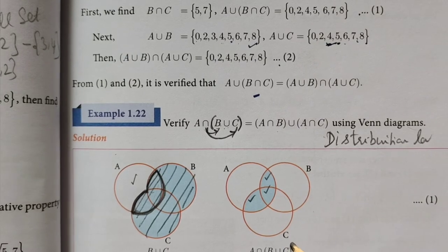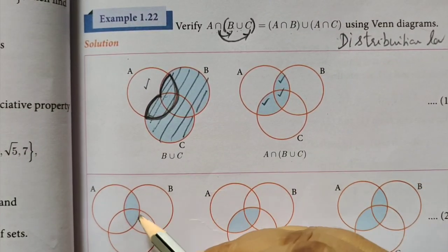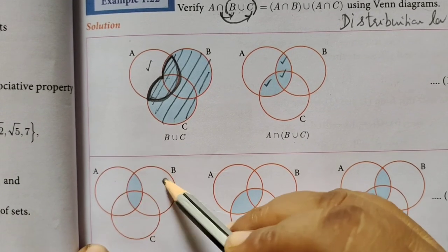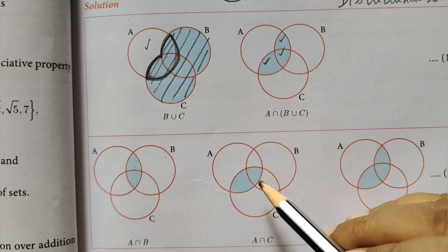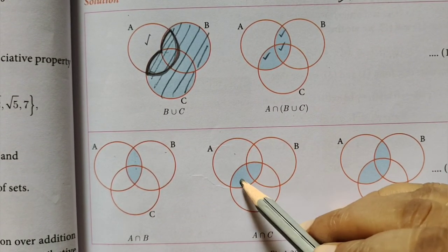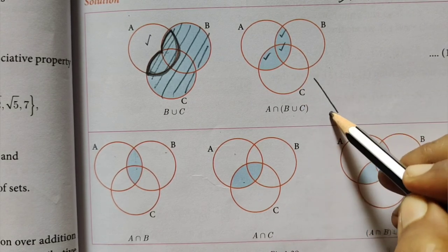So, A intersection B union C. This part is the shaded region. So it's second and fifth.